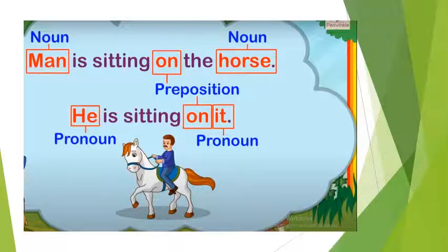Let's read the sentence with me. Man is sitting on the horse. He is sitting on it.